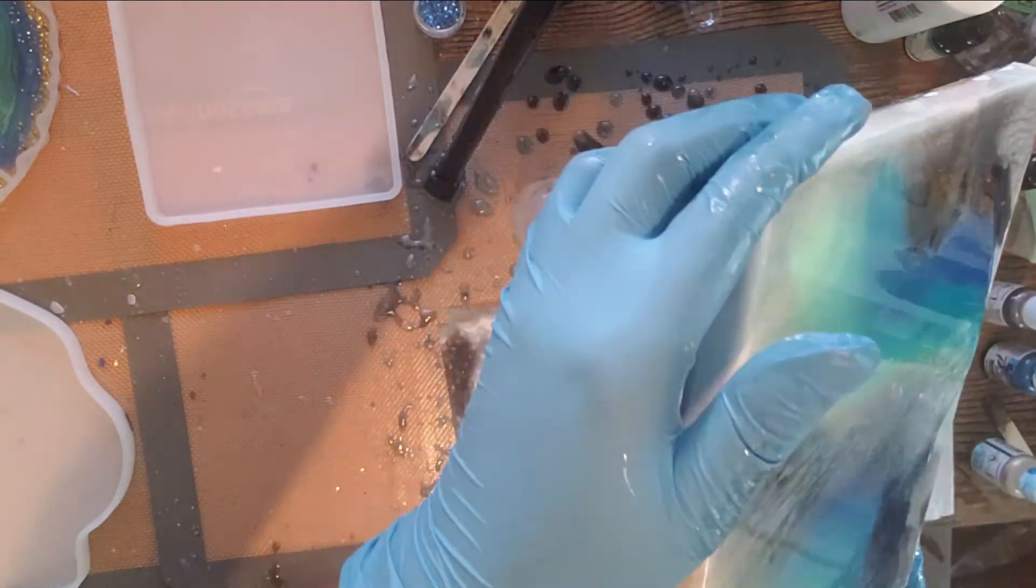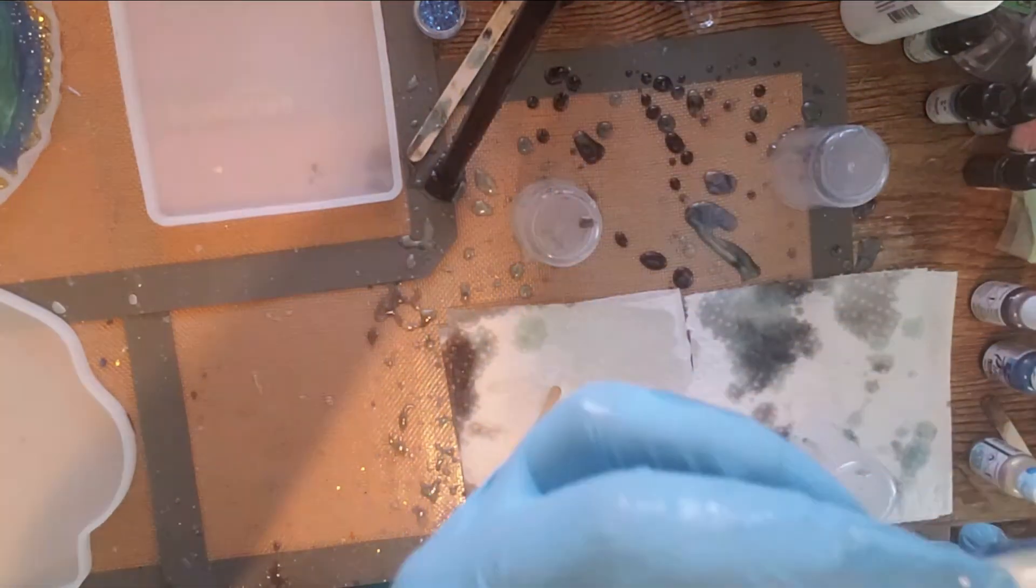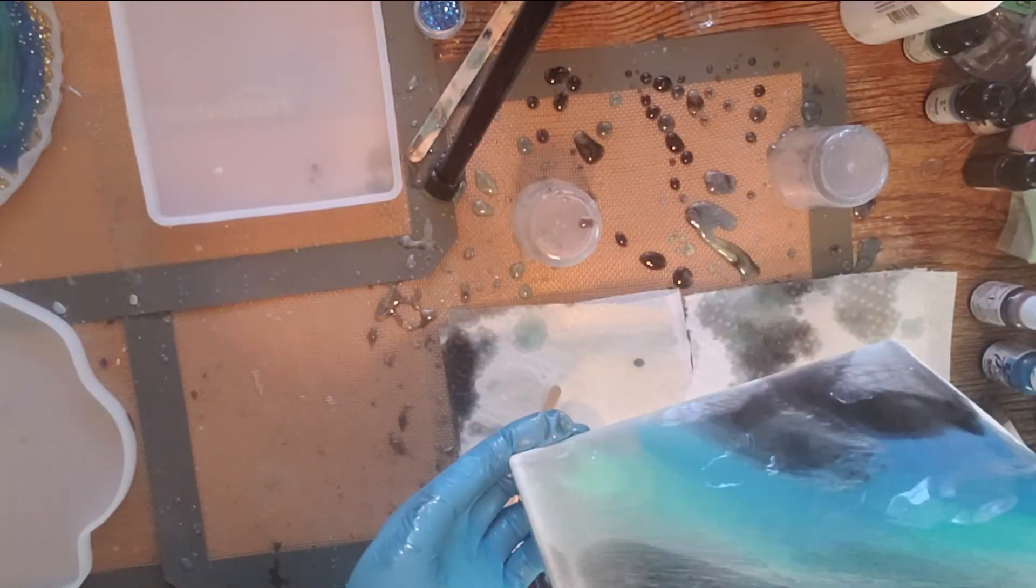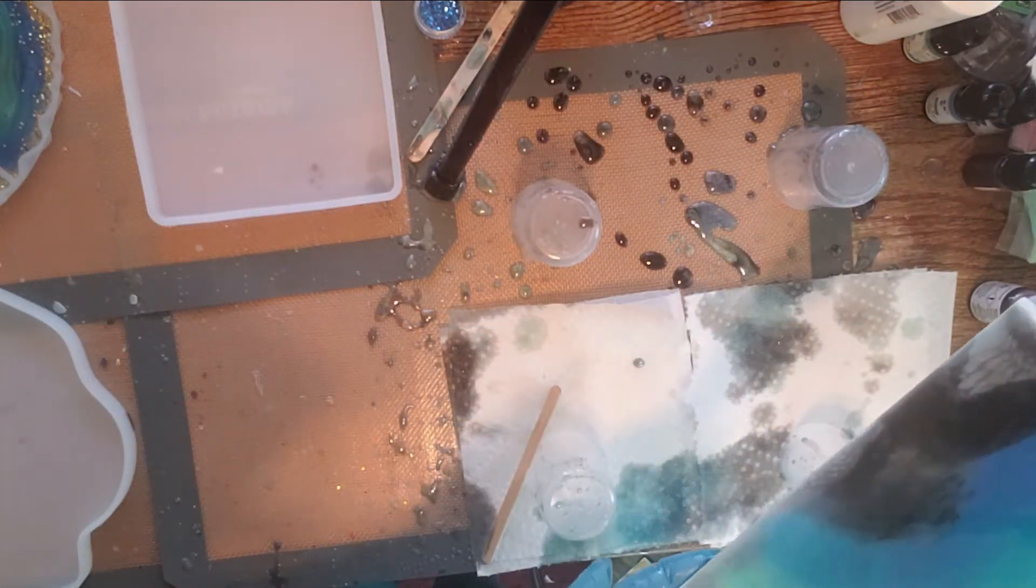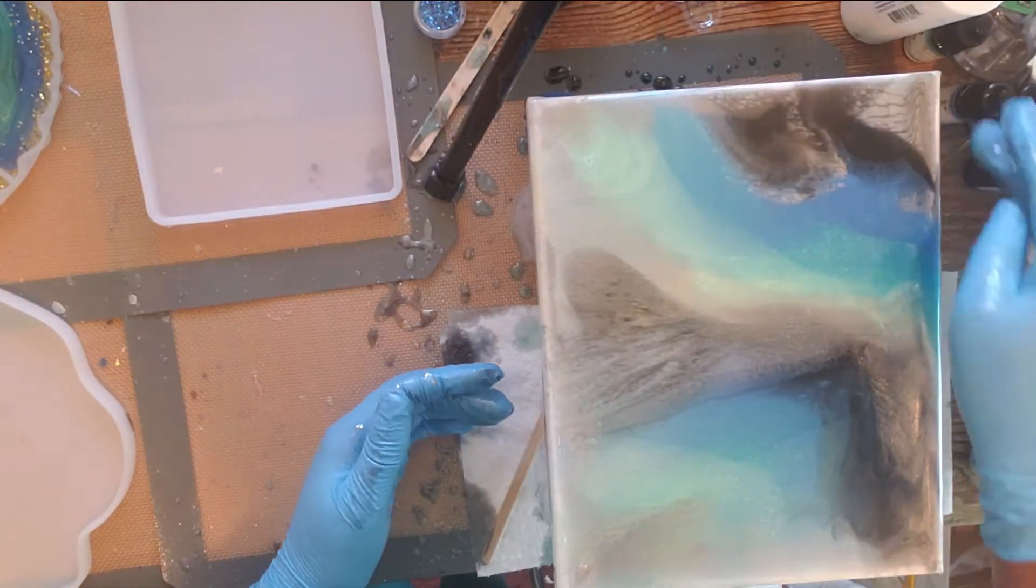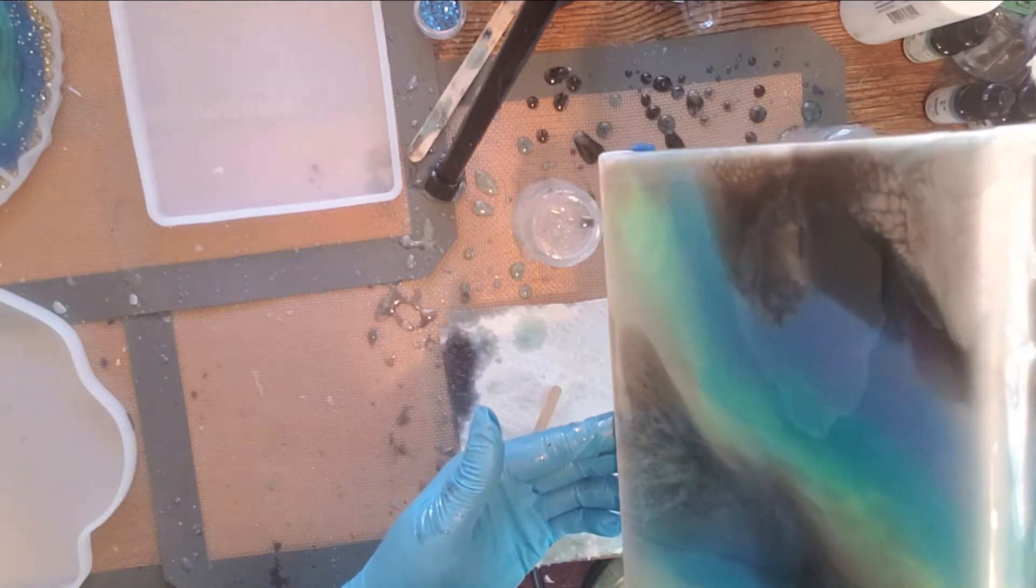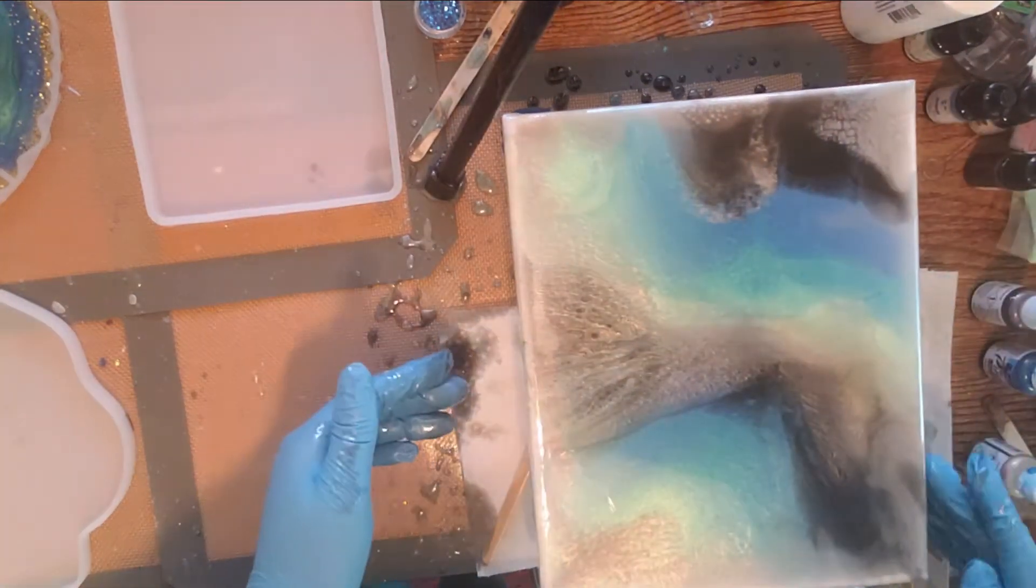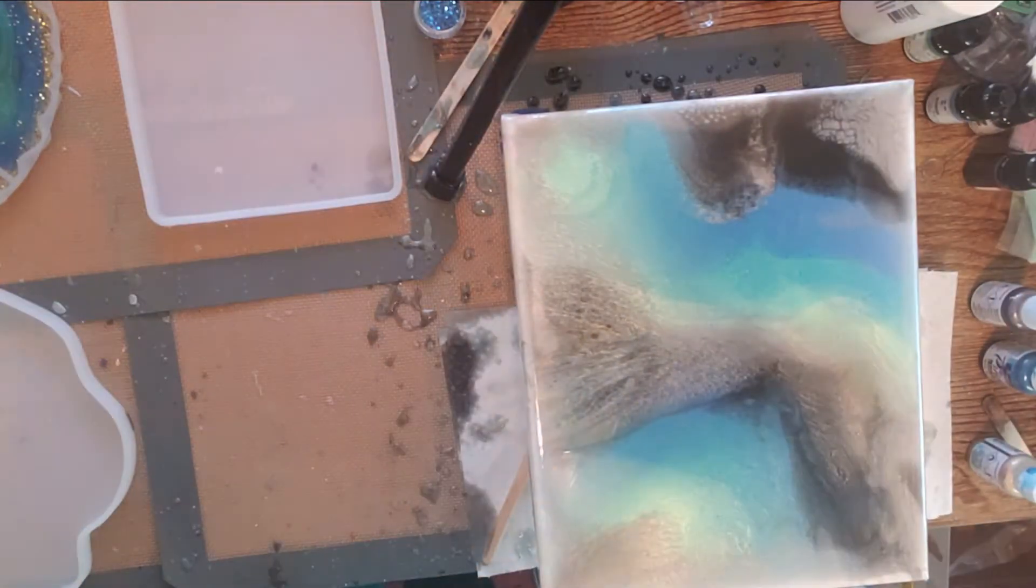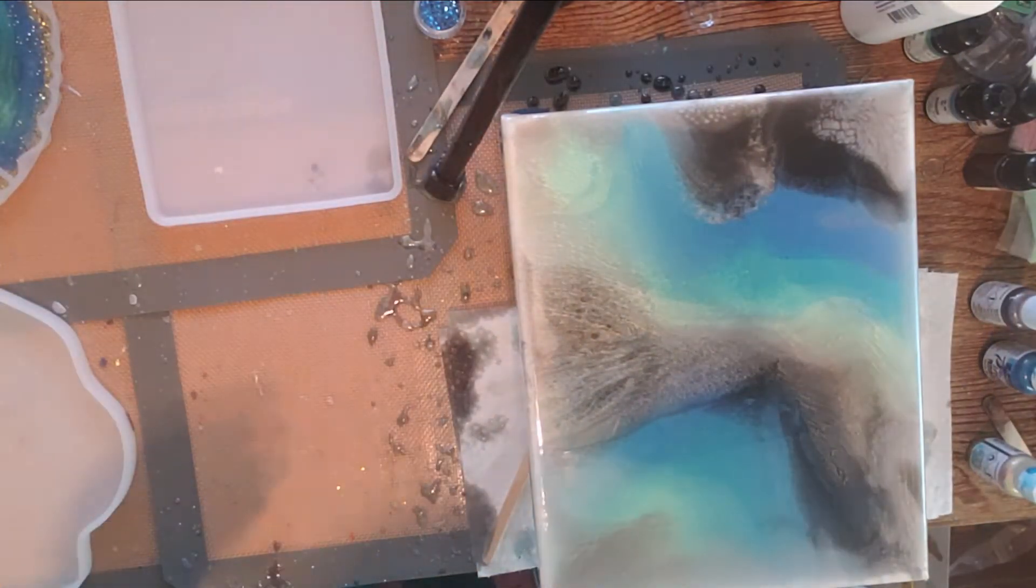And then I decided that my pour art moved a bit too much for my liking. I may have stated before that the table at some point I realized was not level. And so it causes the resin to start shifting and moving while it's just sitting there, which in this case turned out to be a benefit because it gave the picture a really cool effect.